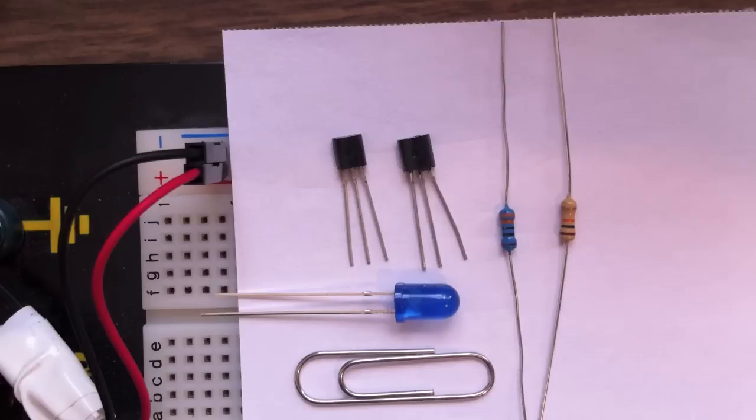One 10k ohm resistor for limiting current to the base of the transistors, one 47 ohm resistor, as well as a paper clip.